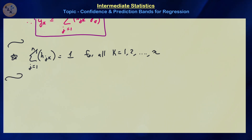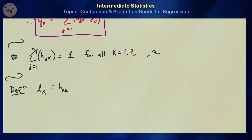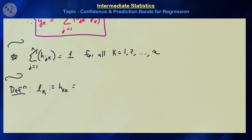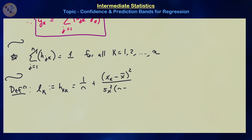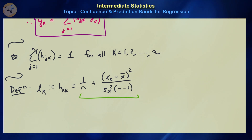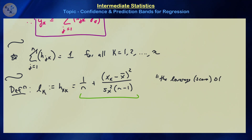We define l_k = h_{kk}, the leverage score of x_k, as: l_k = 1/n + (x_k − x̄)²/(s_x²(n−1)). This formula looks similar to the interior of the standard error expressions for β̂₀ and ŷ(x*). The leverage measures the influence of data point x_k on the fitted value ŷ_k.